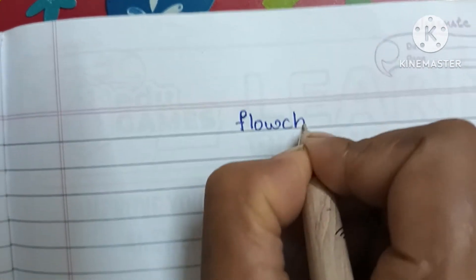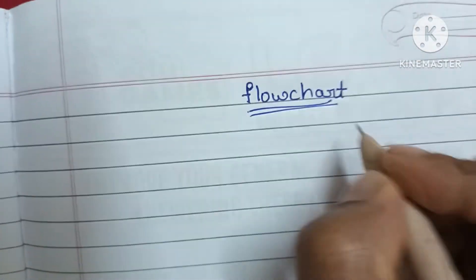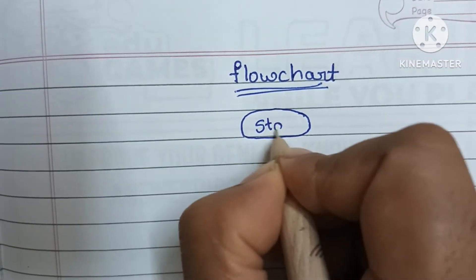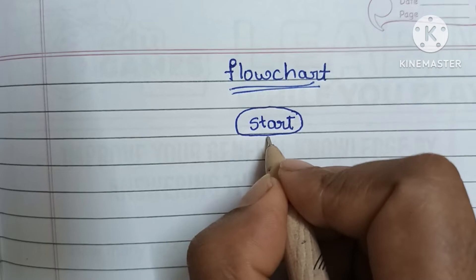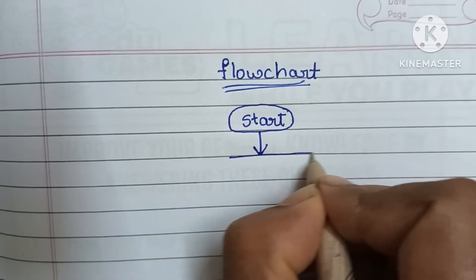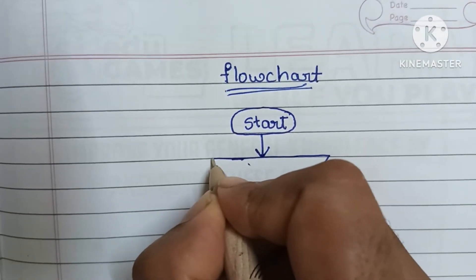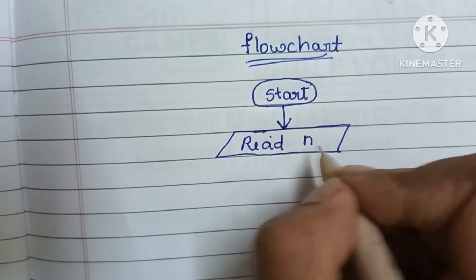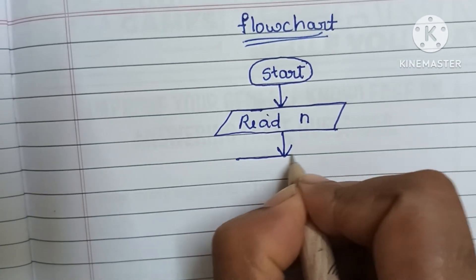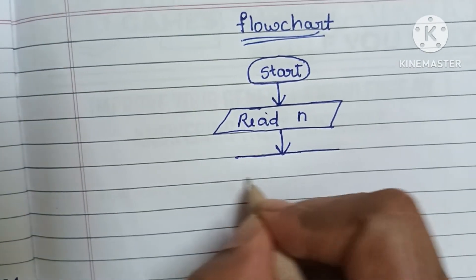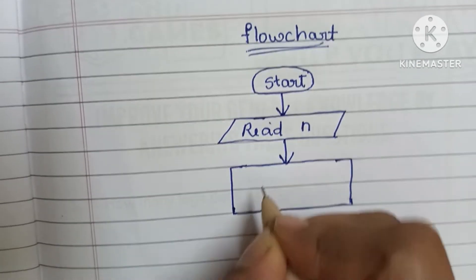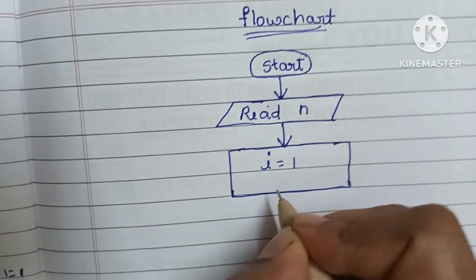Next we have to draw the flowchart. A flowchart is a graphical representation of an algorithm. The flowchart starts with a start statement written within an oval shape. Next we read a number — input values are always written within a parallelogram shape — write 'read n'. Next, declaration is done within a rectangular shape: i equal to 1 and fact equal to 1.